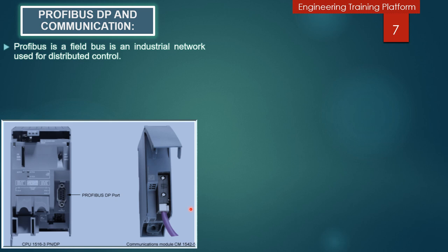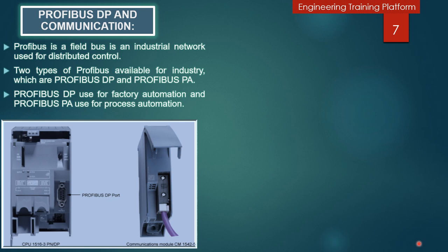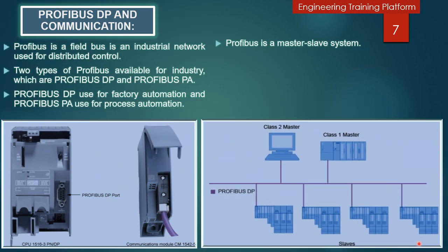A fieldbus is an industrial network used for distributed control, and the most popular fieldbus is PROFIBUS. The two most common forms are PROFIBUS DP and PROFIBUS PA. PROFIBUS DP is used for factory automation and PROFIBUS PA is used for process automation. PROFIBUS is a master-slave system with two classes of master: the class 1 master is the PLC, and the class 2 master is the engineering workstation used for configuration, maintenance, and diagnostic faults.